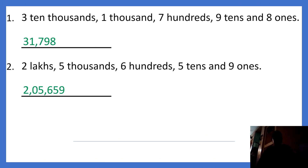The first question given to you is to find the place value of the given number. The answer for that is 31,798. The second answer is 25,659. Now I will move on to the next.